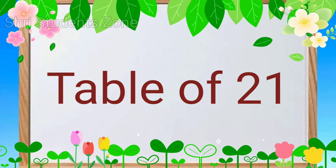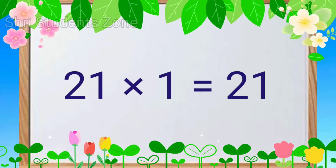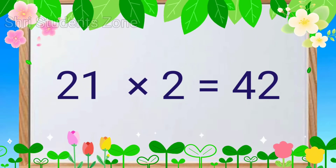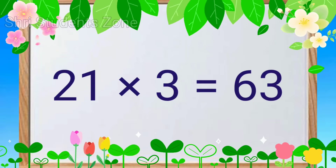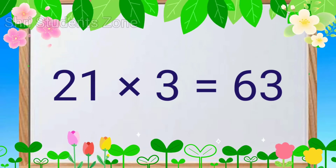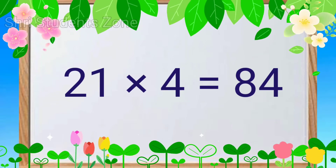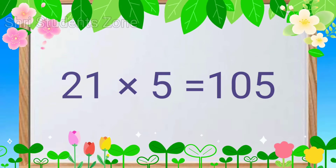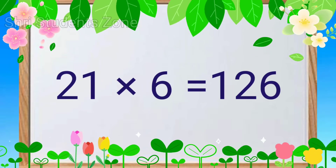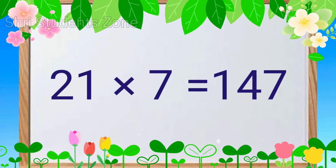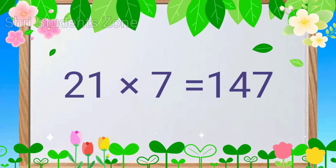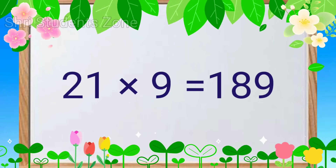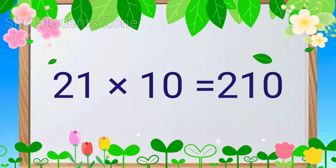Table of 21. 21 ones are 21, 21 twos are 42, 21 threes are 63, 21 fours are 84, 21 fives are 105, 21 sixes are 126, 21 sevens are 147, 21 eights are 168, 21 nines are 189, 21 tens are 210.